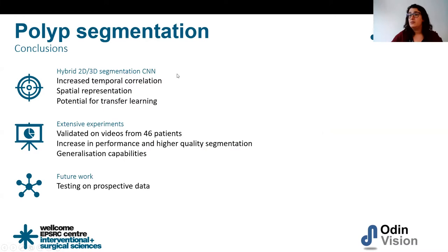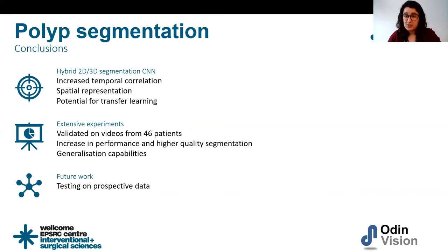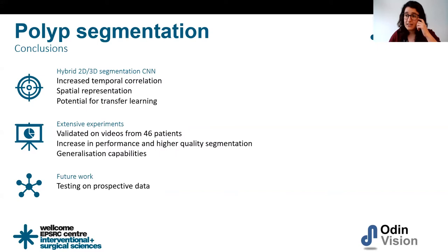Overall, the hybrid 3D-2D architecture improved temporal stability of predictions while keeping good spatial representation and allowing pre-training from specific datasets. It showed good generalization on both internal and external data and increases in performance across standard metrics, detection quality, and temporal stability. It would be good to test this on prospective data used online, as the delay may significantly affect how the clinician uses the endoscope.